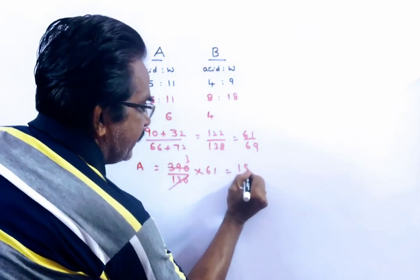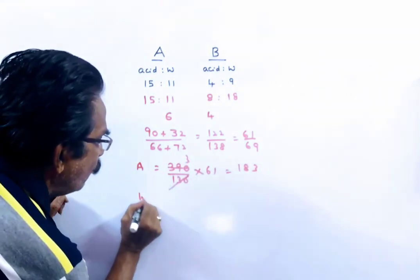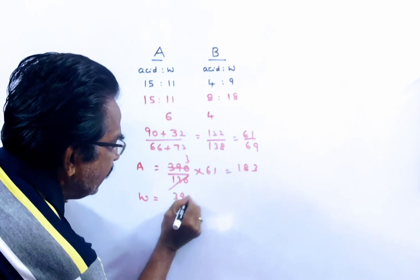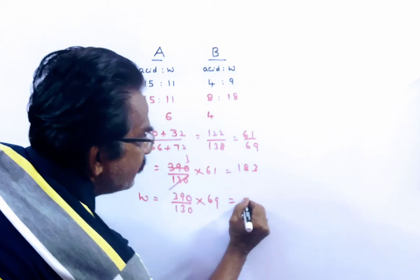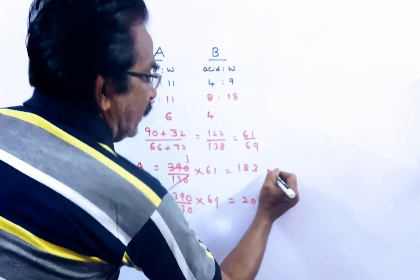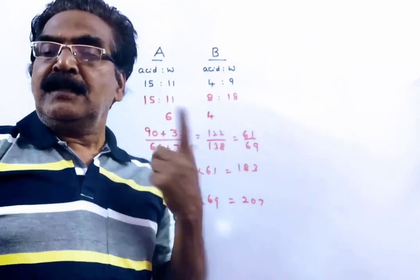And water, 390 by 130 into 69, 207 is water. This is acid, this is water.